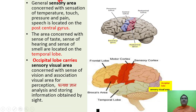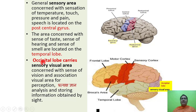The general sensory area is concerned with sensation of temperature, touch, pressure, pain, and speech, located on the postcentral gyrus. The temporal lobe contains areas concerned with the sense of taste, sense of hearing, and sense of smell. The occipital lobe is concerned with the sense of vision and visual association — perception, analysis, and storing information obtained by sight.